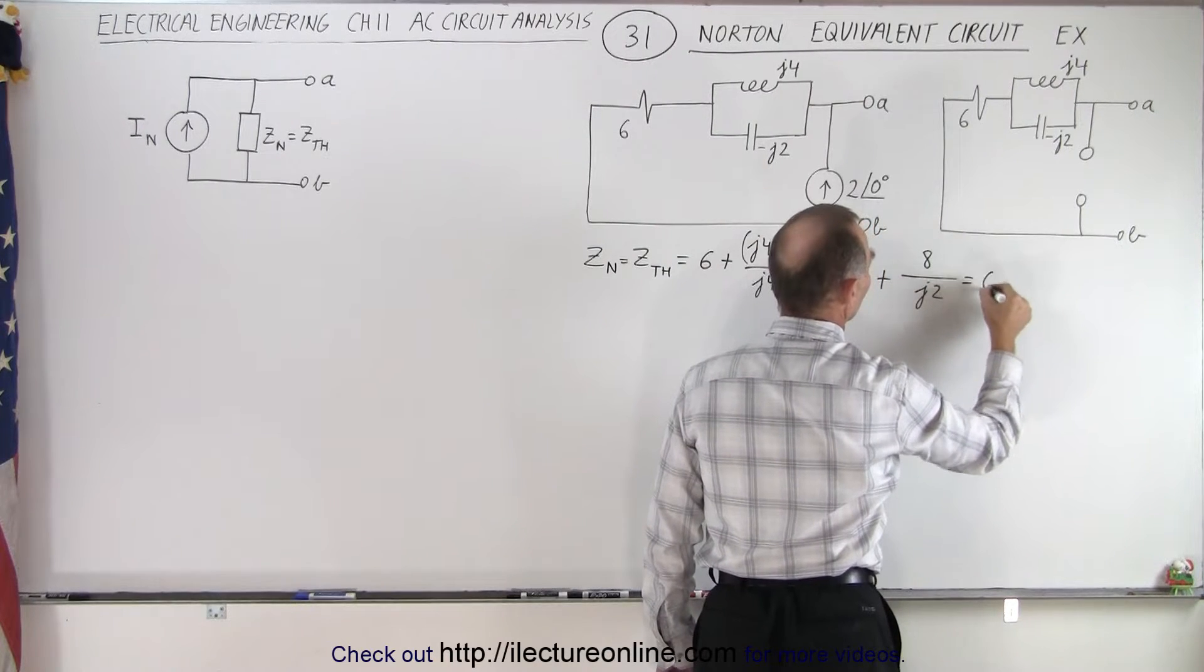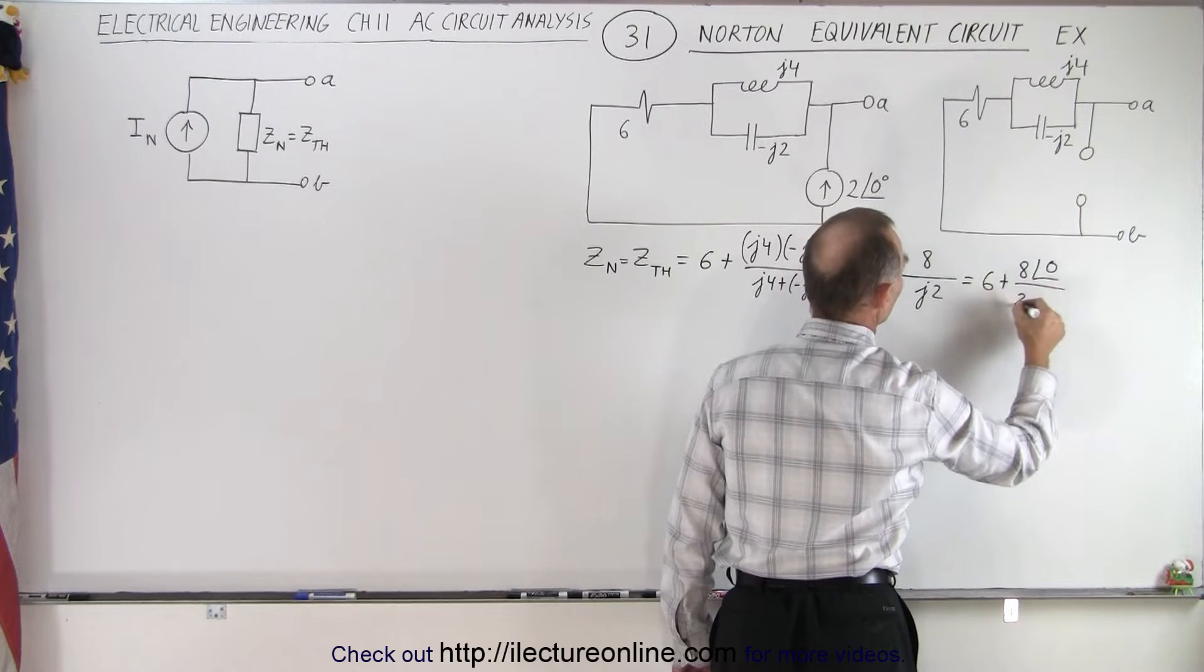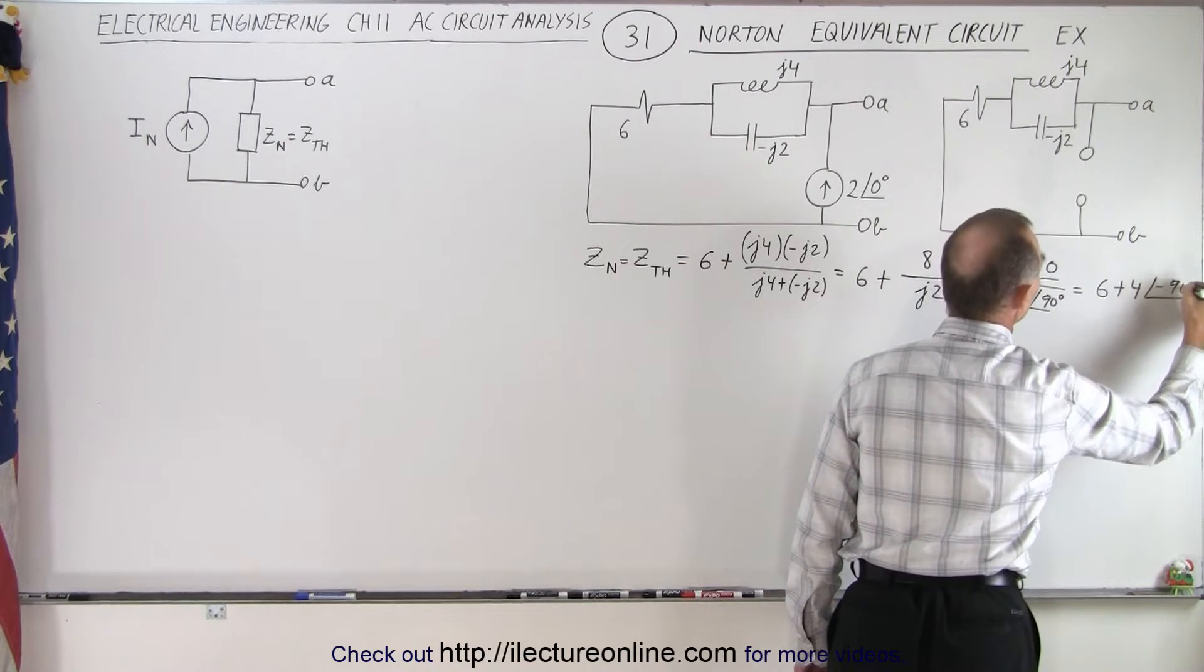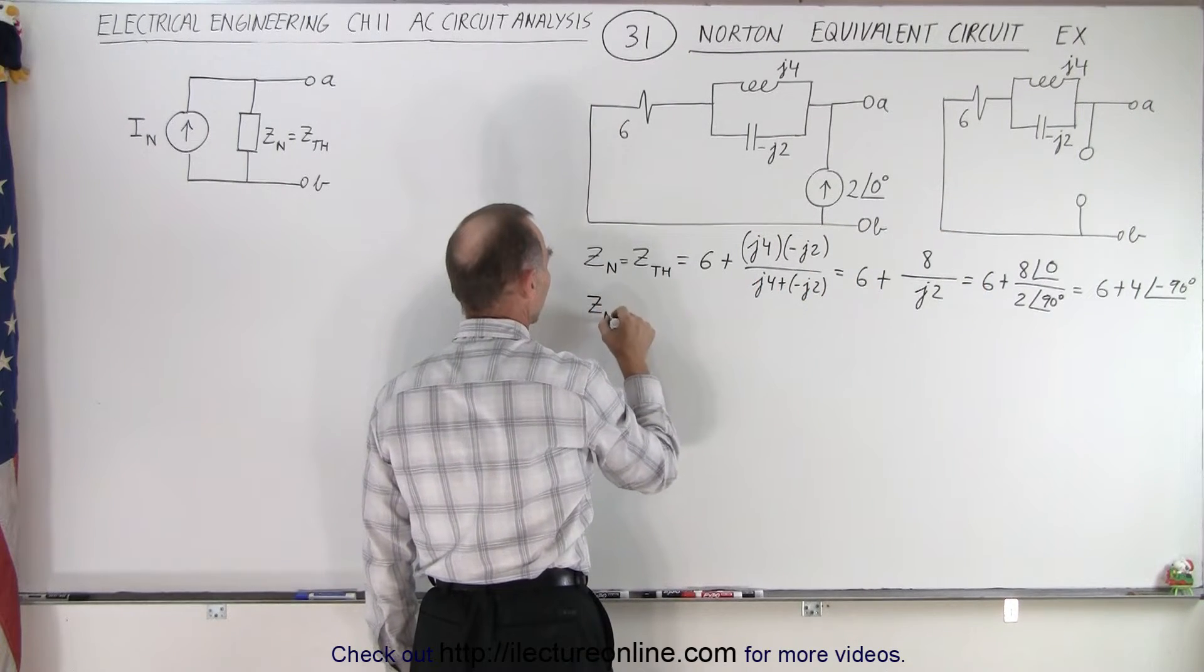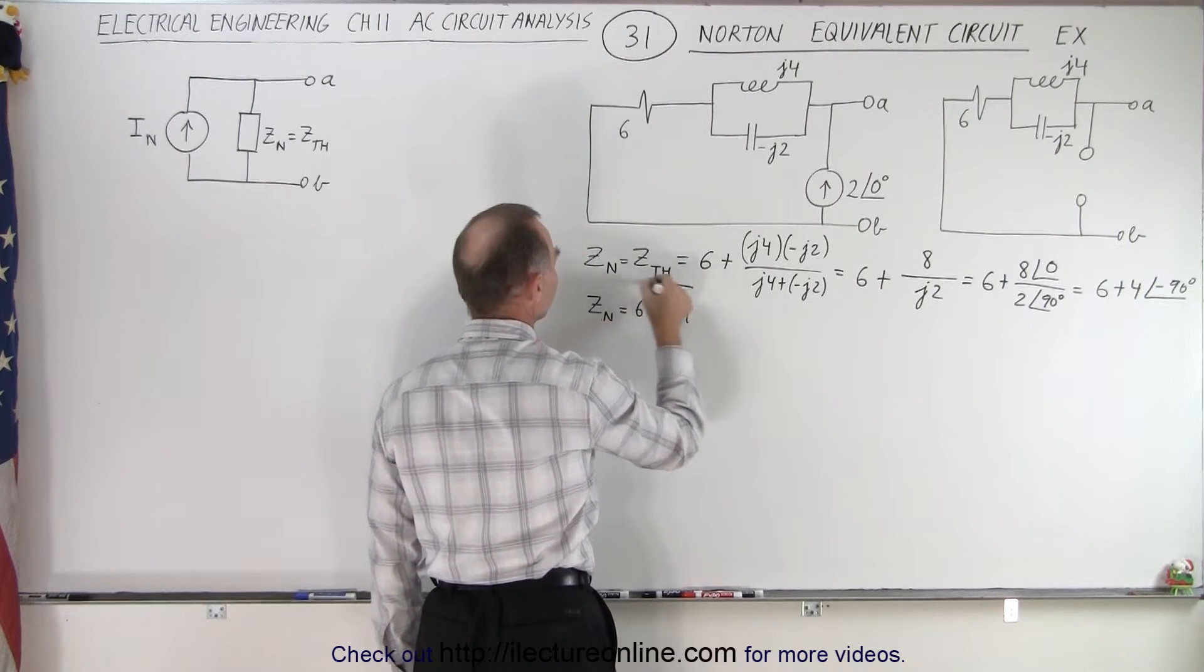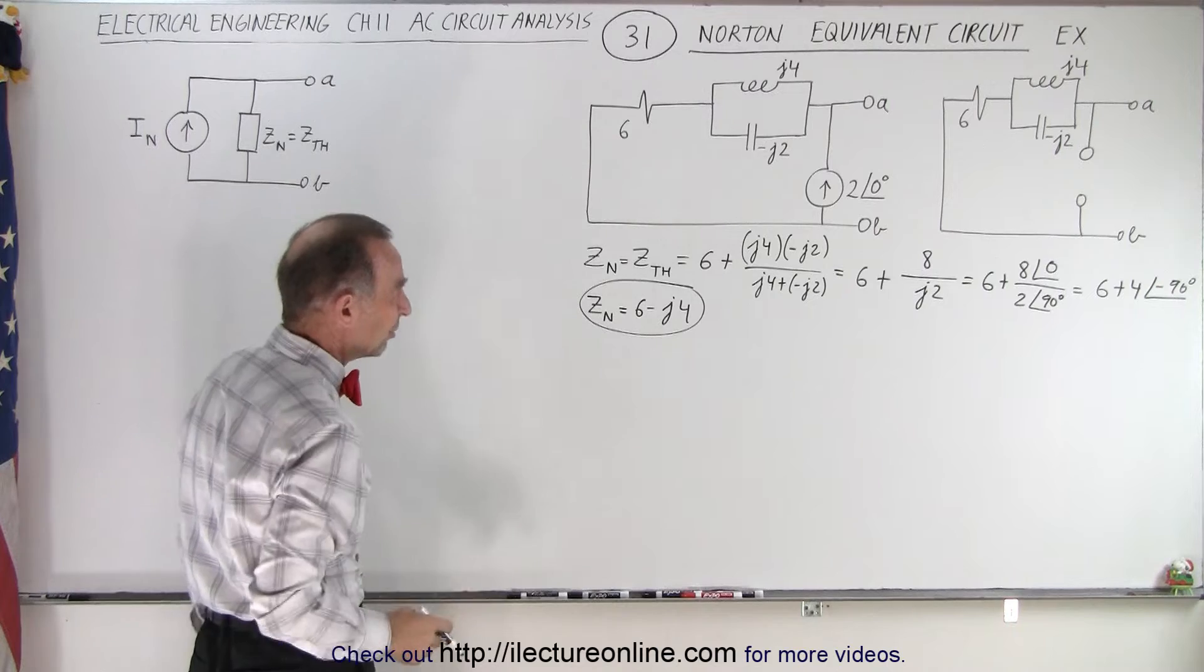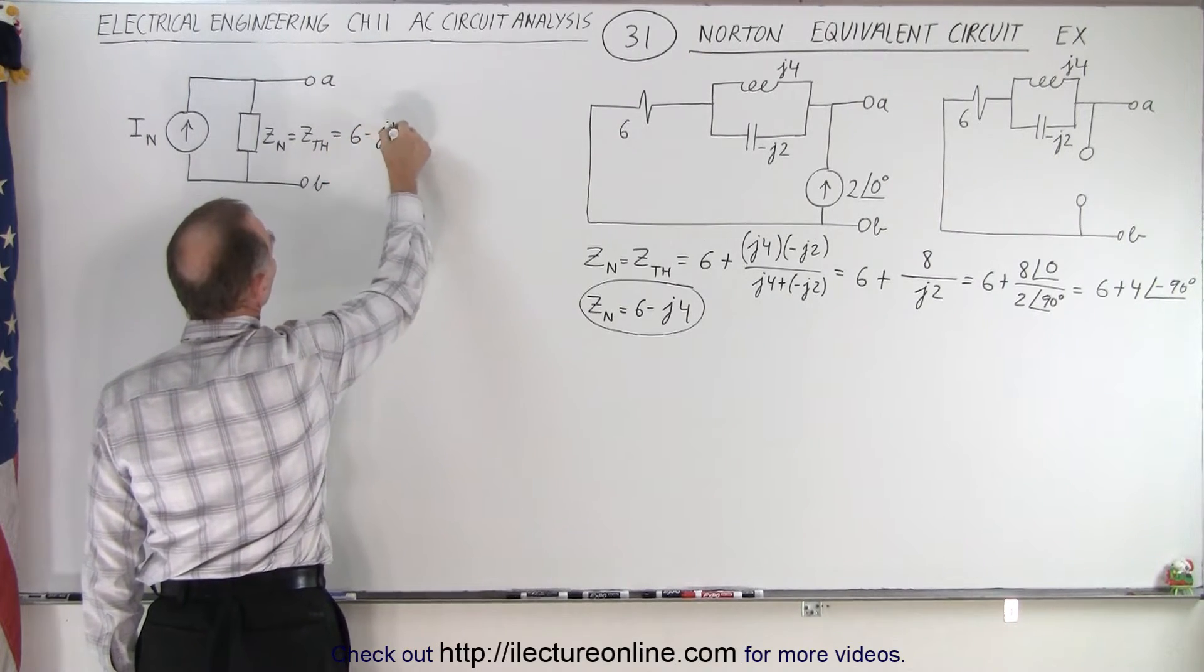That would be a positive 8, so plus 8 divided by this would be j2. This is equal to 6 plus 8 with a phase angle of 0 divided by 2 with a phase angle of 90 degrees. This becomes equal to 6 plus 4 with a phase angle of minus 90 degrees. And essentially the Norton equivalent impedance is going to be equal to 6 minus j4. Notice that was relatively easy. This is equal to 6 minus j4.